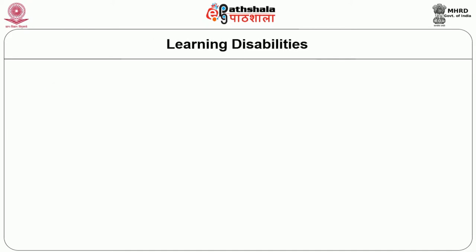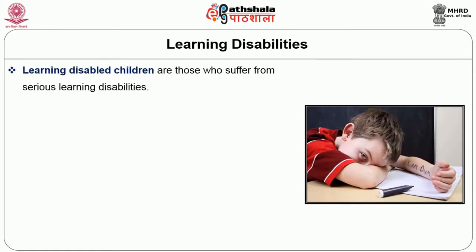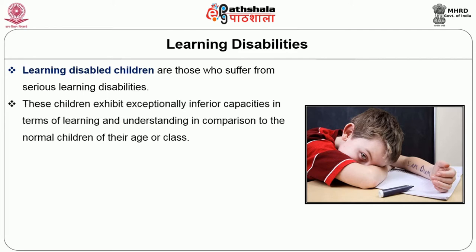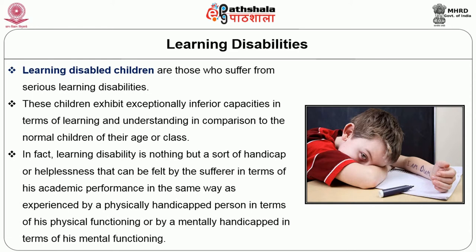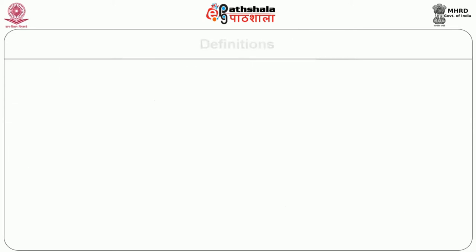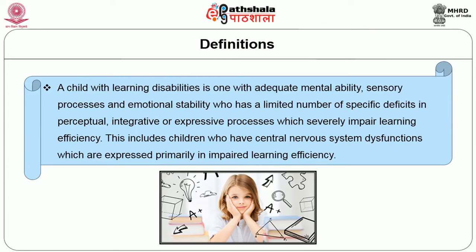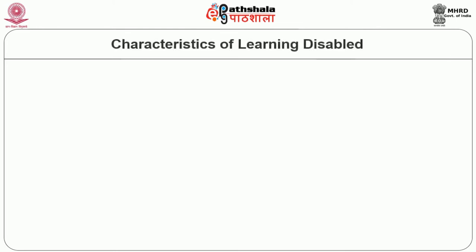The third disorder is learning disabilities. Learning disabled children are those who suffer from serious learning disabilities and exhibit exceptionally inferior capacities in learning and understanding compared to normal children of their age or class. Learning disability is a sort of handicap that can be felt by the sufferer in academic performance, in the same way as experienced by a physically handicapped person in physical functioning. A child with learning disabilities is one with adequate mental ability, sensory process and emotional stability who has a limited number of specific deficits in perceptual, integrative or expressive processes which severely impair learning.